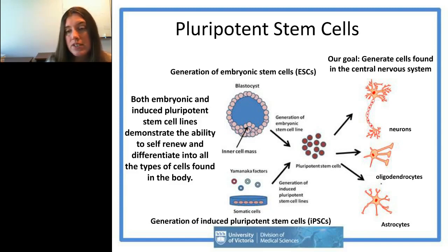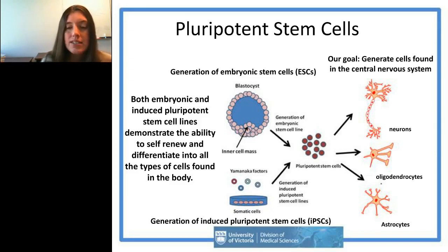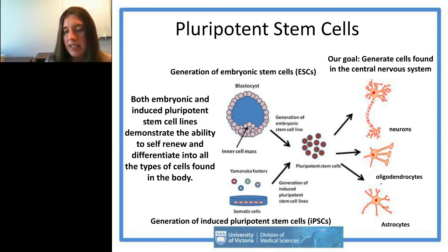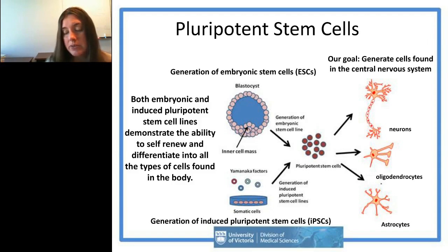As a tissue engineer, what was very appealing about induced pluripotent stem cells is that in theory you can take a person's adult cells, reprogram them back to a stem cell-like state, differentiate them down into specific lineages, and generate patient-specific tissues.